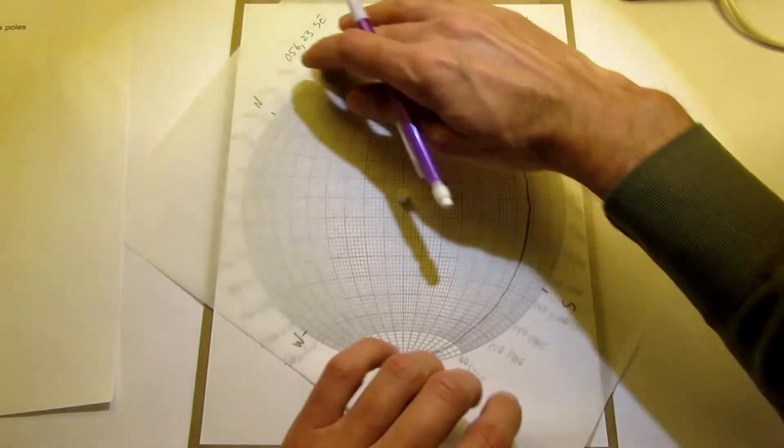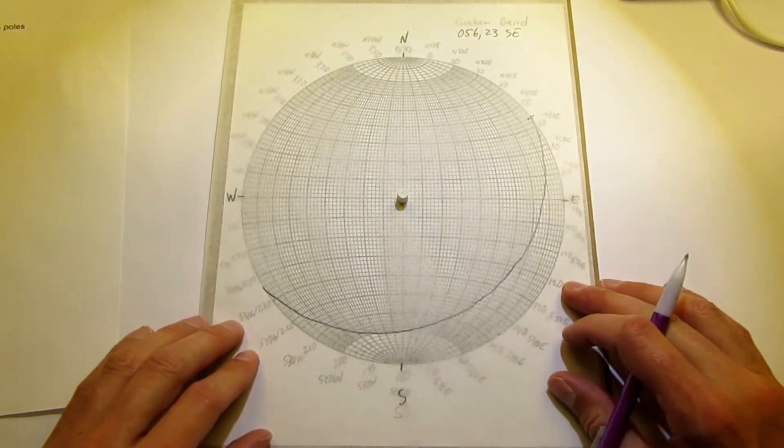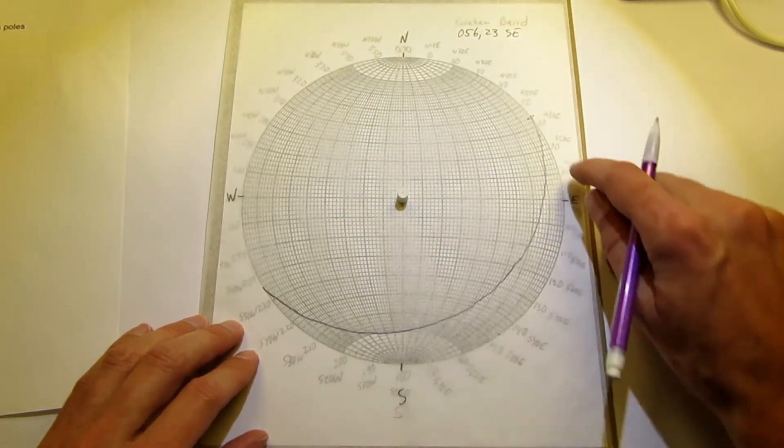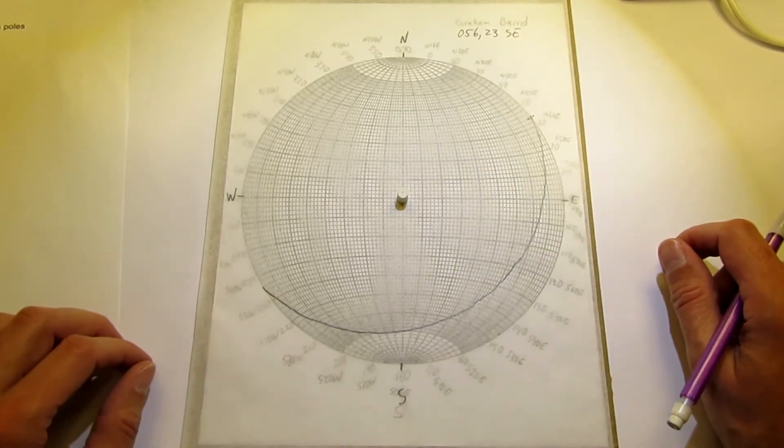And now you're going to trace out that great circle at 23 degrees. And once that's done, the last step, put north on the tracing paper back to north on the stereonet, and you've drawn the great circle for this plane, 056-23 southeast.